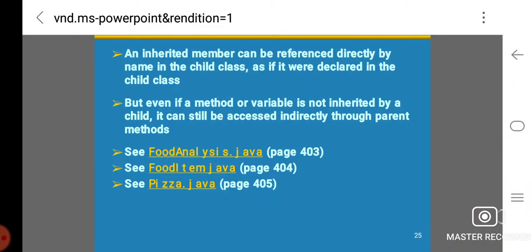An inherited member can be referenced directly by the name of the child class as if it were declared in the child class. But even if a method or variable is not inherited by the child, it can still be accessed indirectly through parent methods.